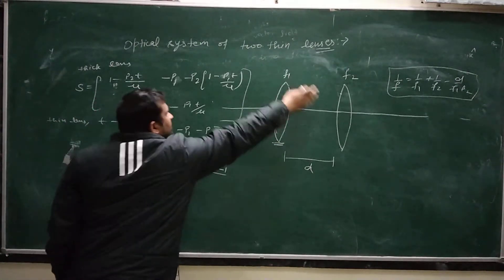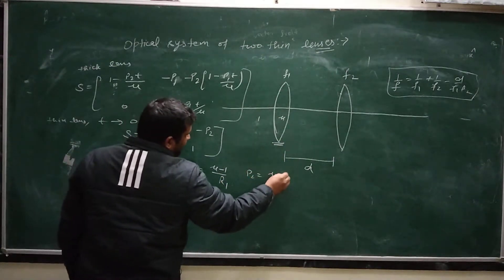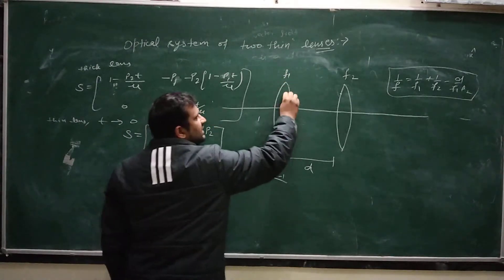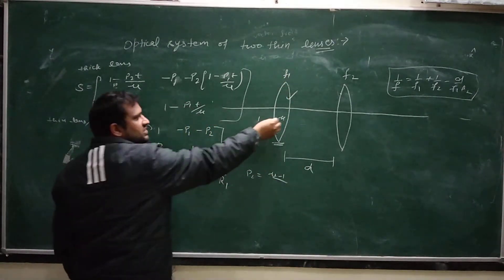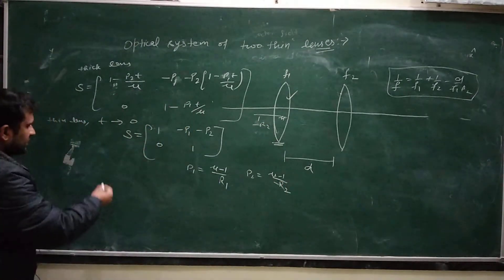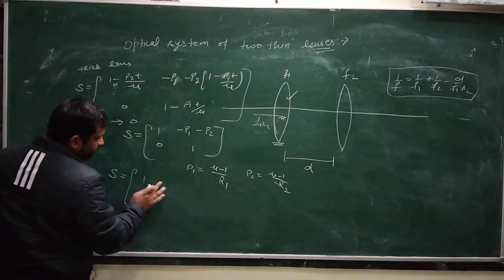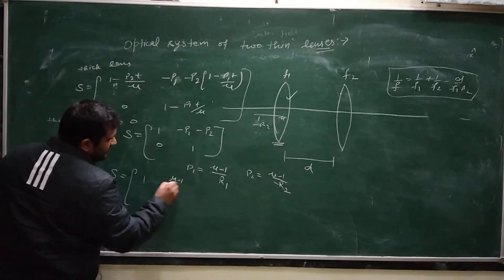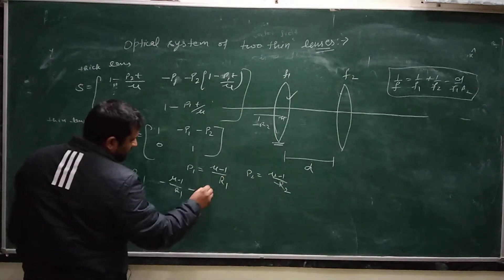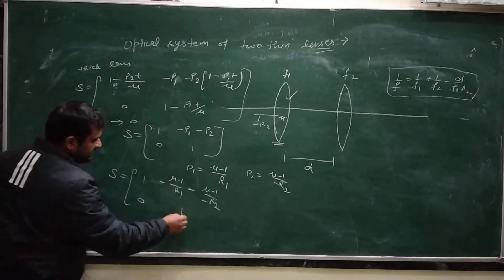P1 = (μ − 1) / R1, where R1 is the radius of curvature of the first surface. And P2 = (μ − 1) / (−R2), because the second surface has radius of curvature −R2. So we use −R2 here.